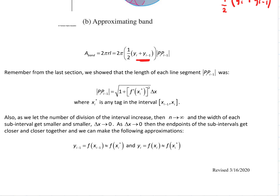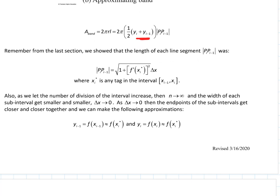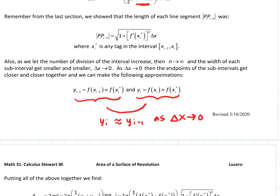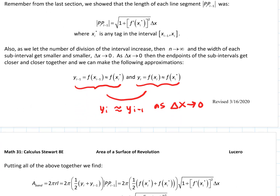Once that happens, we plug that back into the area of the band. There's one more piece: as delta x gets smaller and smaller, the two y values get squeezed together — y sub i is essentially the same as y sub i minus 1 as delta x goes to zero. As the length of the subinterval shrinks, the y sub i and y sub i minus 1 values get closer and closer together.